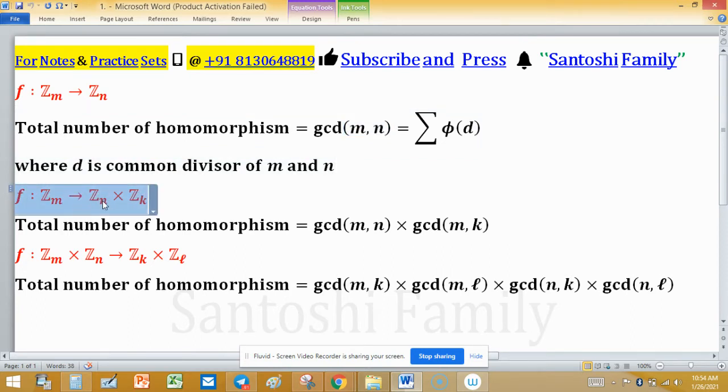If f is defined from Zm to Zn × Zk, the total number of homomorphisms you can find is gcd(m,n)...